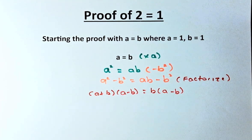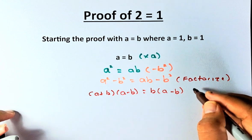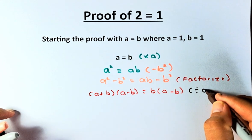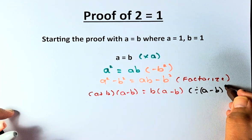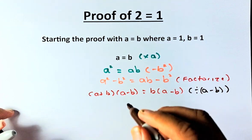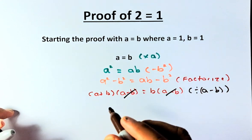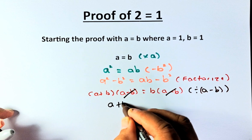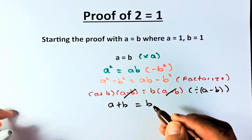And now, what's the next step? It's going to be interesting. What we're going to do is that we are going to divide by A minus B on both sides of the equation. So now, A minus B will cancel out. And what's left is A plus B equals to B.